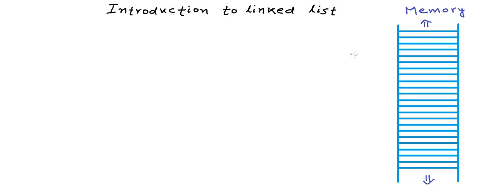Let us say this is computer's memory and each partition here is one byte of memory. As we know, each byte of memory has an address. We are showing only a section of the memory — that's why it is extending towards the bottom and the top. Let's say the address increases from bottom to top. So if this byte is address 200, the next byte would be address 201, and the next byte would be address 202, and so on. What I want to do is draw this memory from left to right horizontally instead of drawing it from bottom to top.